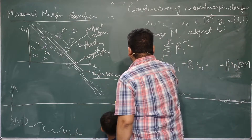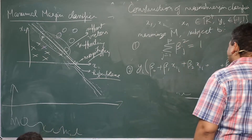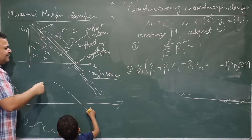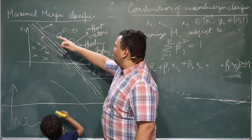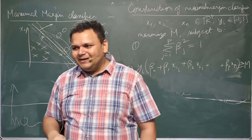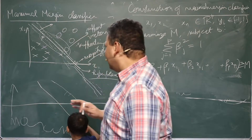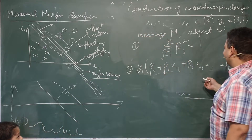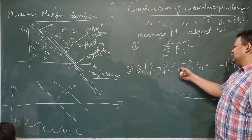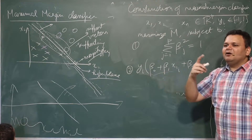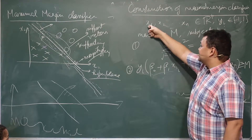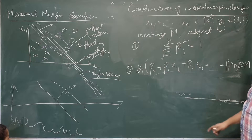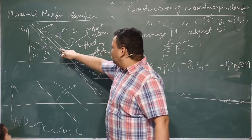Let us focus on the second condition. We have already discussed this: if you are on one side of the line you get positive numbers; on the other side you get negative numbers. This is the equation of my hyperplane: β₀ + β₁x₁ + β₂x₂ and so on. I am putting one of my training data points in — say x₁, y₁.